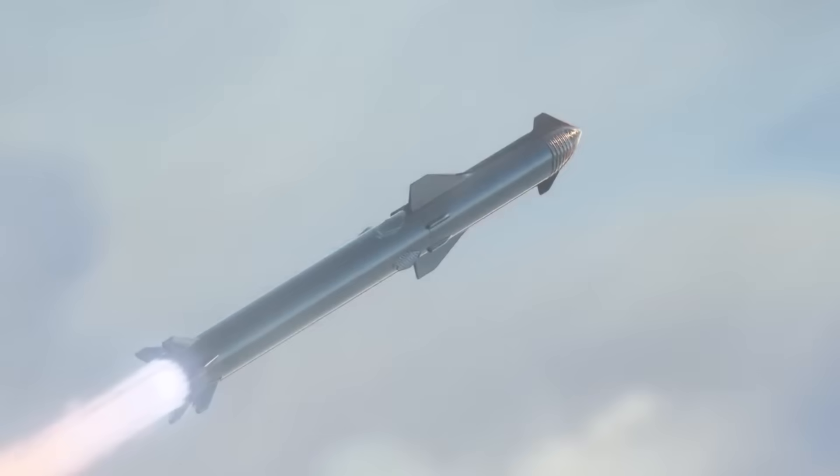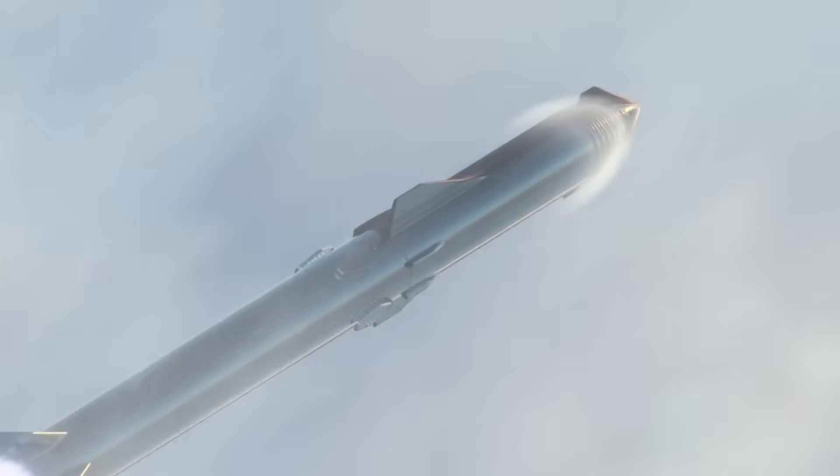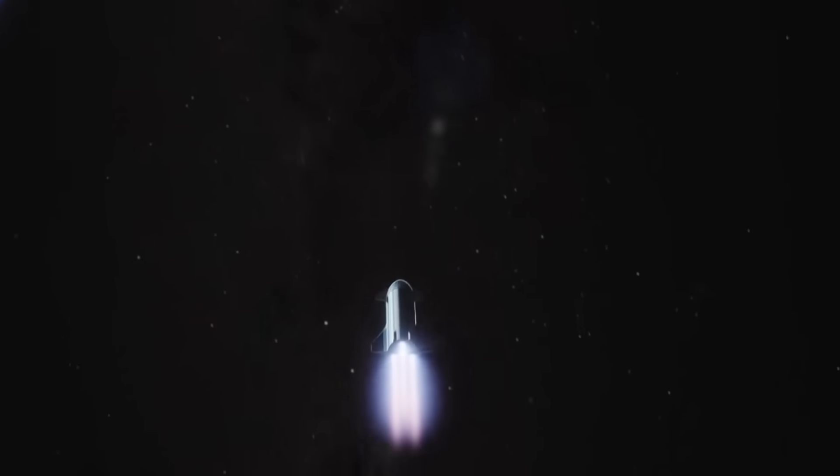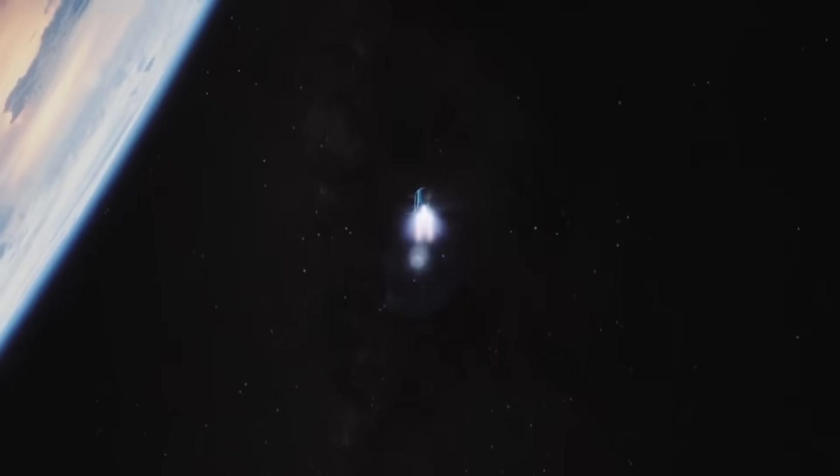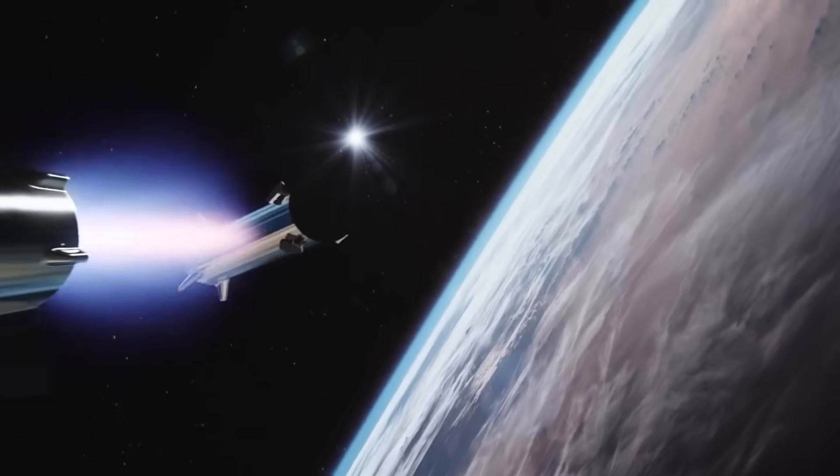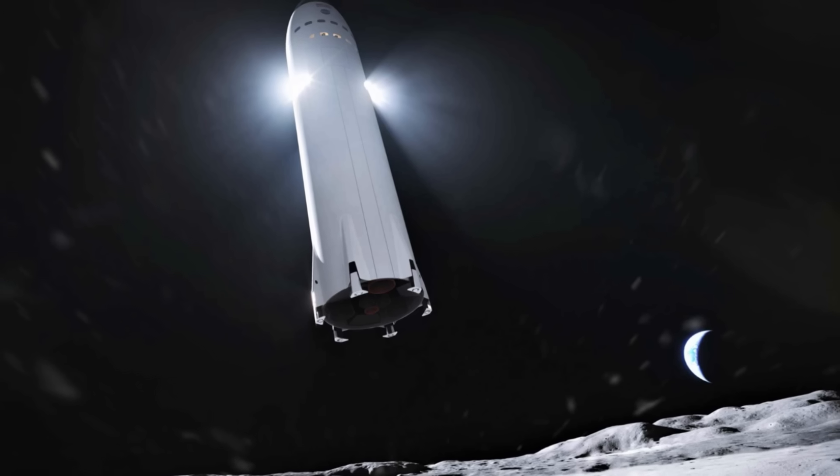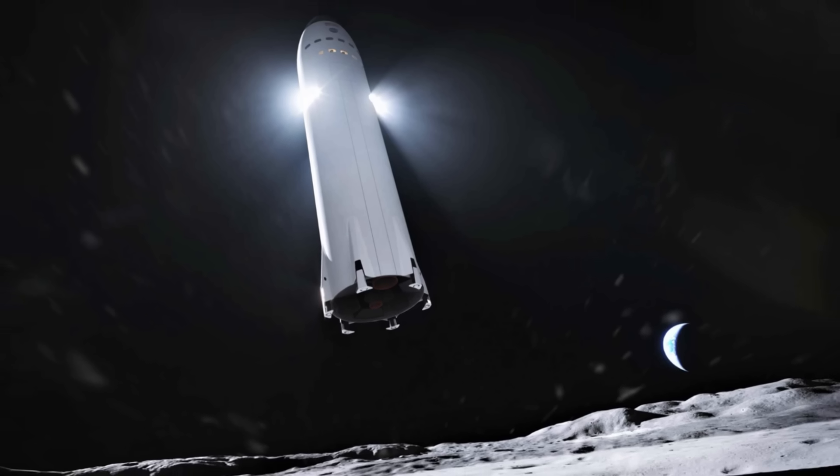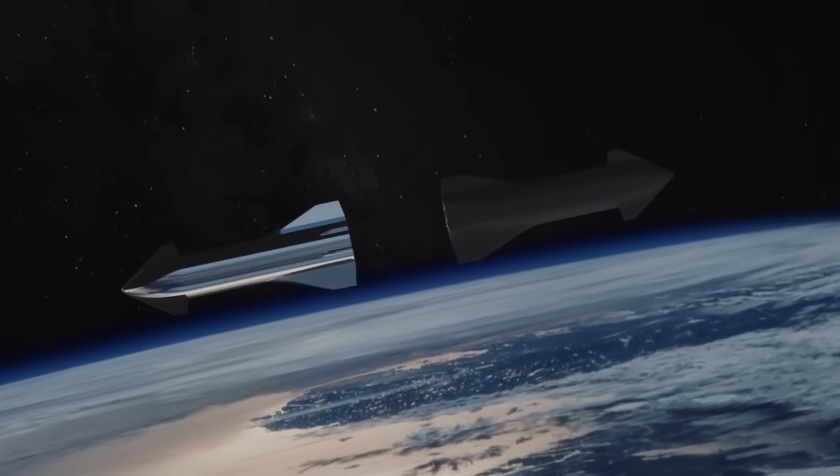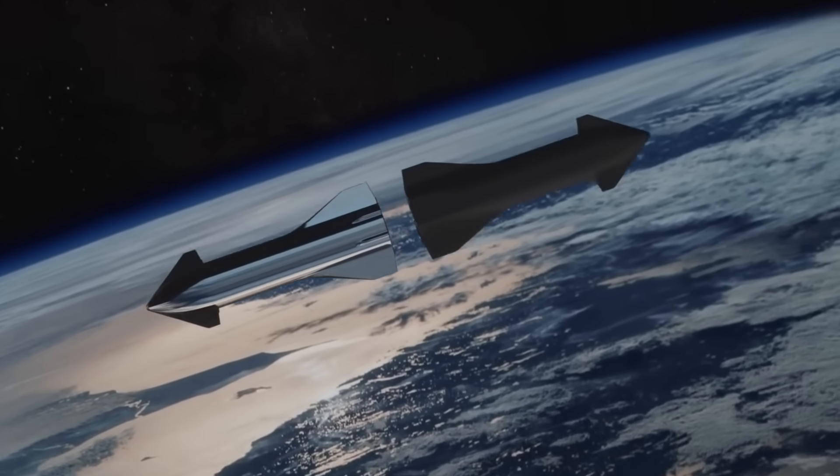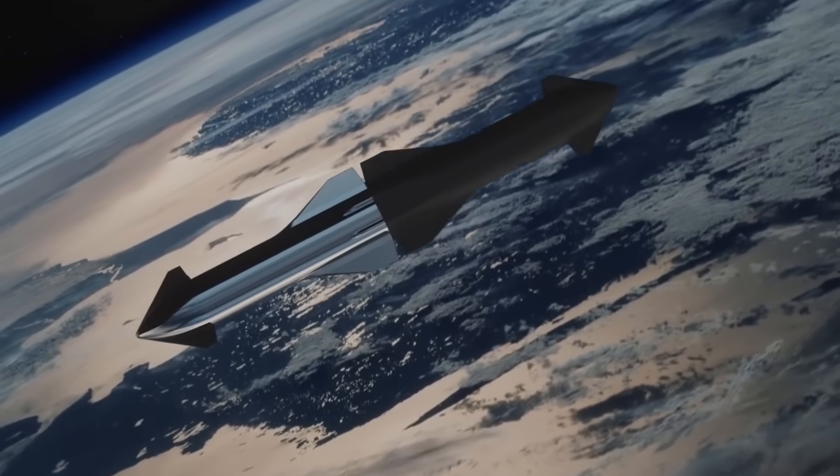Super Heavy lifts the second stage out of the thickest parts of the atmosphere, and Starship does the rest of the work to get into orbit. After separating, Super Heavy comes back down to land, just like the Falcon 9. For Starship, the aim is to travel to the Moon and Mars. In order to achieve this, SpaceX will use a fleet of Starships to refuel in space.